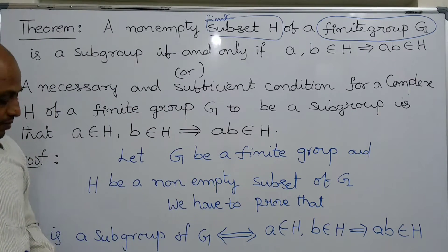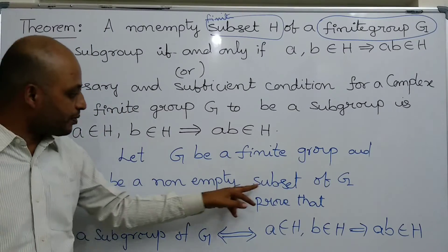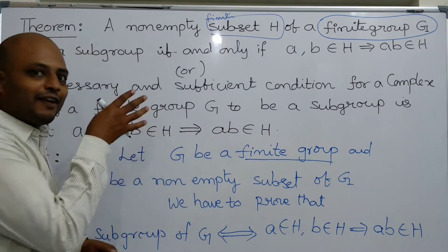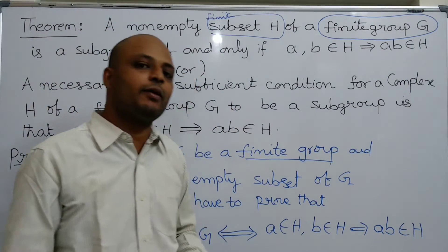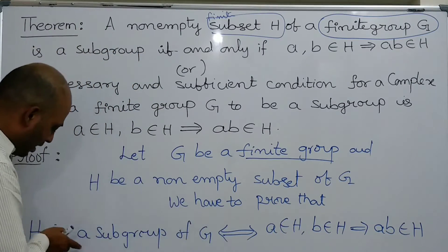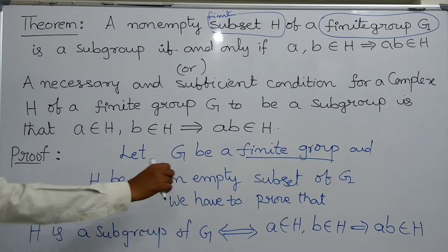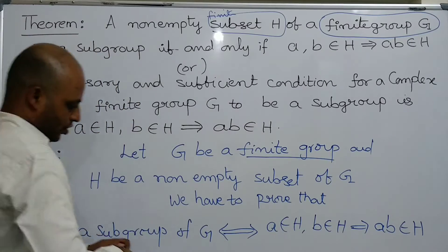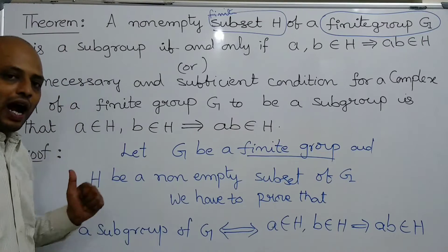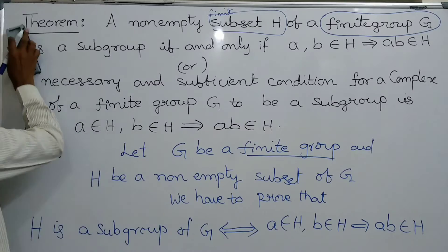Let us start the proof of the theorem. Let G be a finite group and H be a non-empty subset of G. The word 'finite group' is very important. G being a finite group means it consists of only a finite number of elements. We have to show that H is a subgroup of G if and only if A, B belongs to H implies AB belongs to H. First we take H is a subgroup of G and prove the condition; in the converse part, we take the condition and prove that H is a subgroup of G.